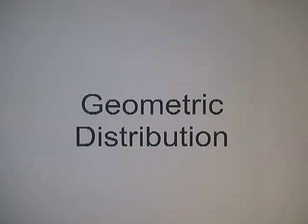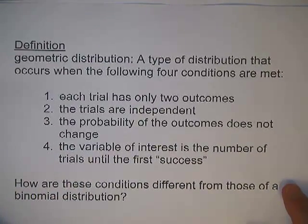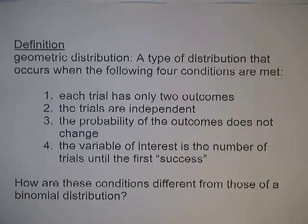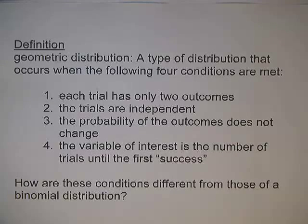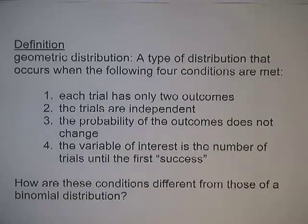This tutorial covers the geometric distribution. Geometric distribution is a type of distribution that occurs when the following four conditions are met. One, each trial has only two outcomes. Two, the trials are independent. Three, the probability of the outcomes does not change. And four, the variable of interest is the number of trials until the first success.